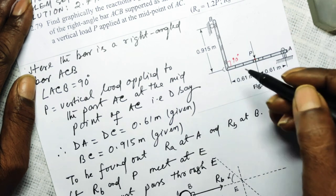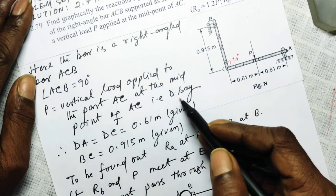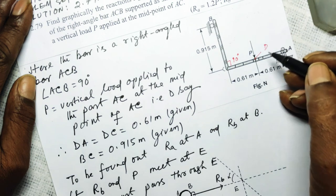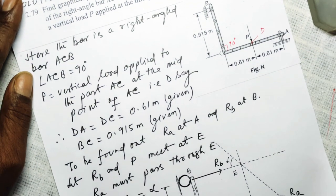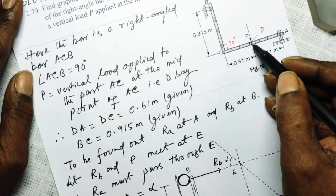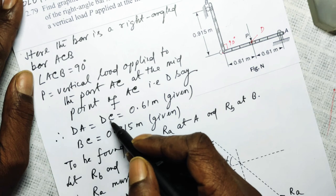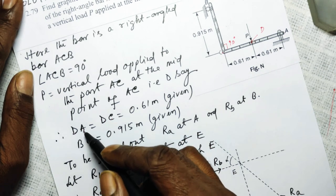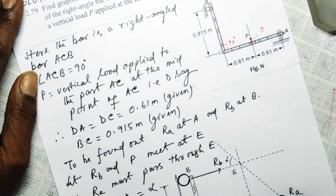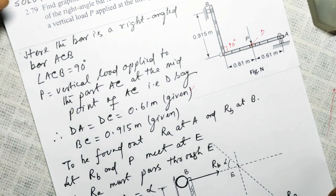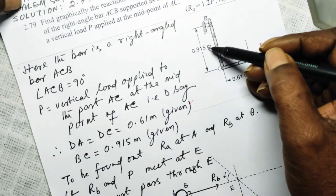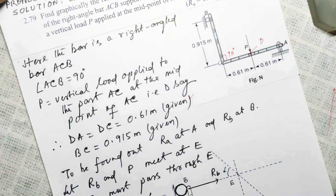Let this midpoint be called D. Since D is the midpoint of side AC, CD is equal to AD. From the original problem, DA = DC = 0.61 meters, and the length from B to C is 0.915 meters.